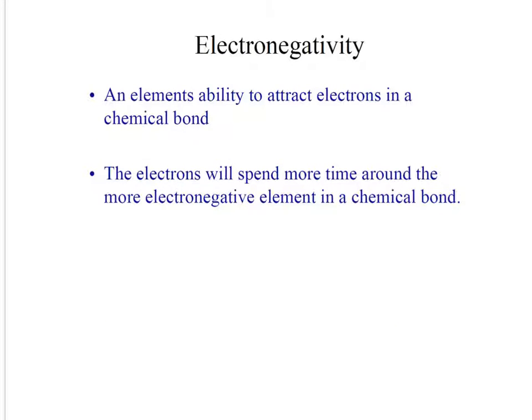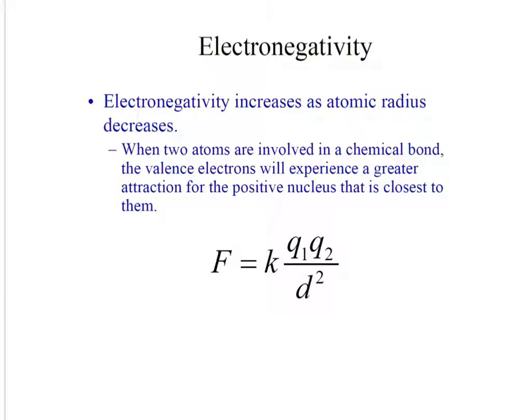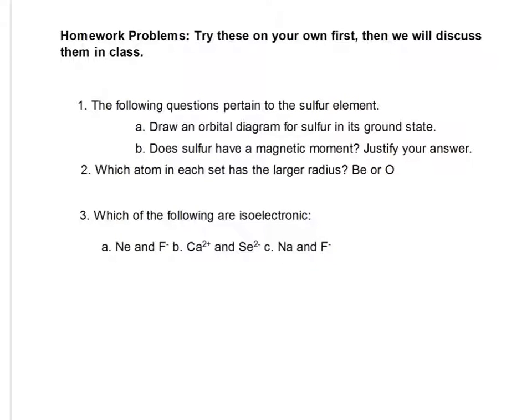Electronegativity is an element's ability to attract electrons in a chemical bond. Electrons will spend more time around the more electronegative element in a chemical bond. So our trends for electronegativity: up and to the right. We don't care about noble gases. They don't tend to form chemical bonds, although we'll see that xenon and krypton actually do form some, but that's later. Here's your justification for electronegativity. And try these problems, and we'll work on them in class.